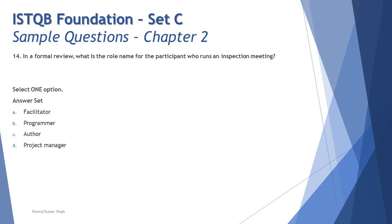Let's jump into the questions. The very first question of this chapter is question number 14: In a formal review process, what is the role name of the participant who runs an inspection meeting? That looks like a very tricky question because now you will start thinking about who is specifically responsible in an inspection.